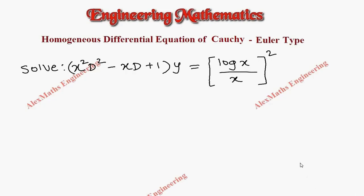Hi students, this is Alex. In this video we are going to solve a problem based on the homogeneous differential equation of Euler type, which is also known as the Cauchy-Euler type. Here we see the homogeneous differential equation with variable coefficients. By giving a substitution, we are going to convert this into constant coefficients.